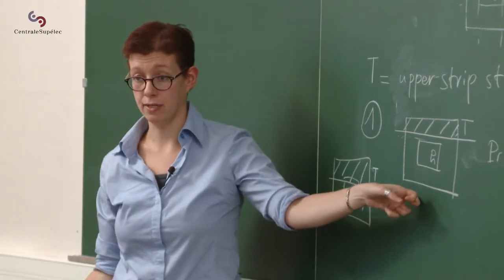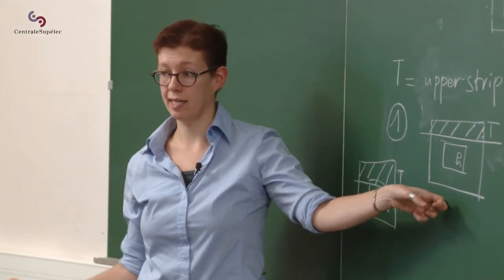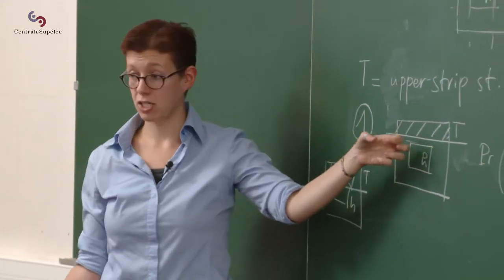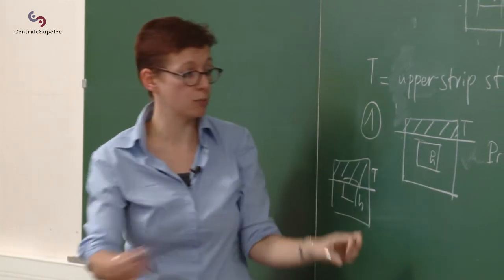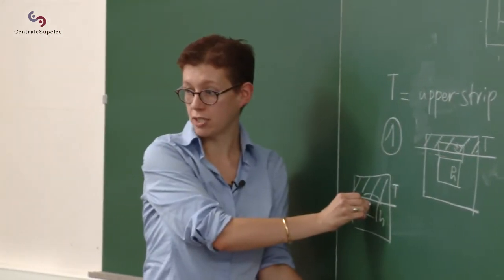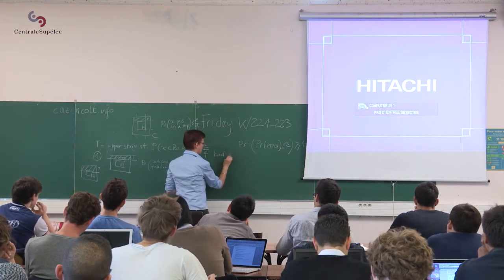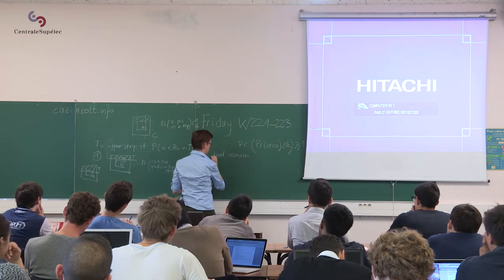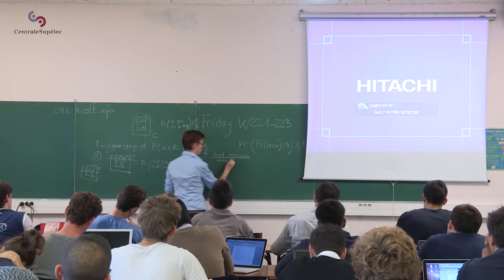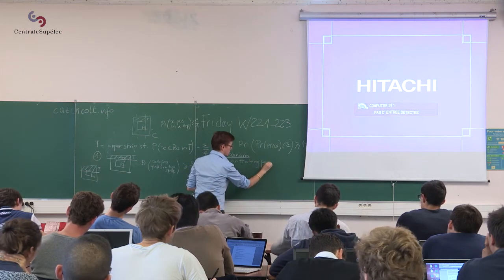Okay, when does this scenario happen? It happens if I have no training examples that are in T. Because H is tied to the training examples, if I had a positive example here, then H would come here, and then I would be in that situation. So the bad scenario happens when no training point is in T.